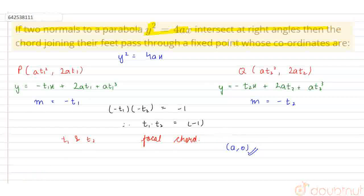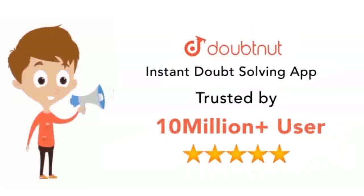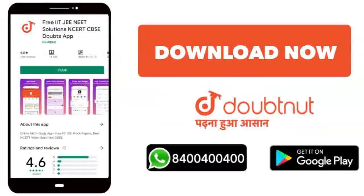Thank you. Class 6 to 12, JEE, NEET, means advance level, 10 million students. Now if you download the Doubtnet app or WhatsApp, write your doubts, 8400400400.